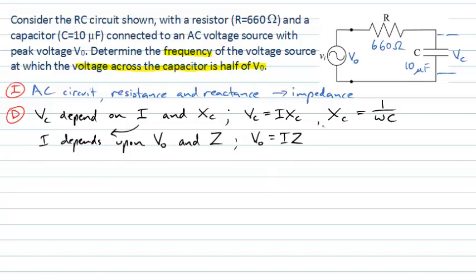In these equations I'm dealing with peak quantities. The voltage across the capacitor is a peak voltage: the peak current multiplied by the capacitive reactance. The applied peak voltage V0 gives a peak current I multiplied by the impedance Z. We need to remember what impedance depends upon — it depends upon the combination of resistances and reactances. We square them, add them, and take the square root. In this case it's just a resistor and a capacitor, so no inductance term. The capacitive reactance depends upon the frequency of the applied voltage.